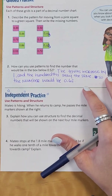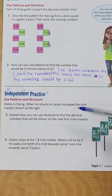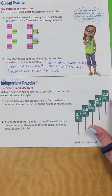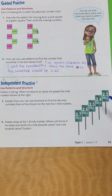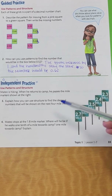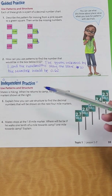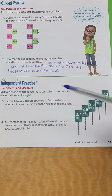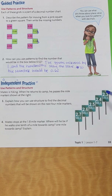Now let's go down to the independent practice. It says that Mateo is hiking. When he returns to camp, he passes the mile markers shown — these are mile markers like you've seen on the highway that tell you where on the interstate you are. It says: explain how you could use structure to find the decimal numbers that would be shown for the next four mile markers. So if this pattern continued, what would be on those next four mile markers?